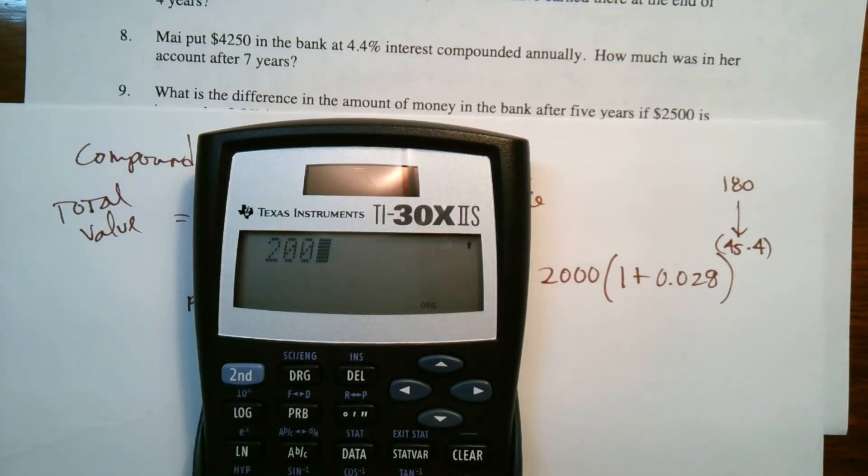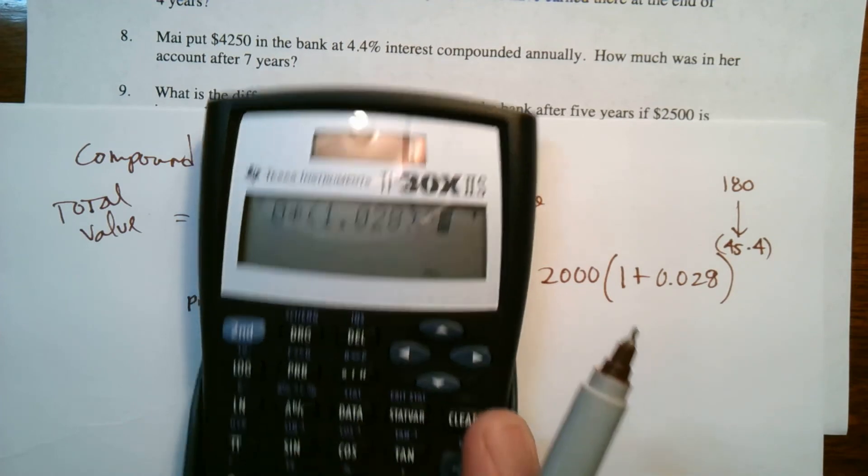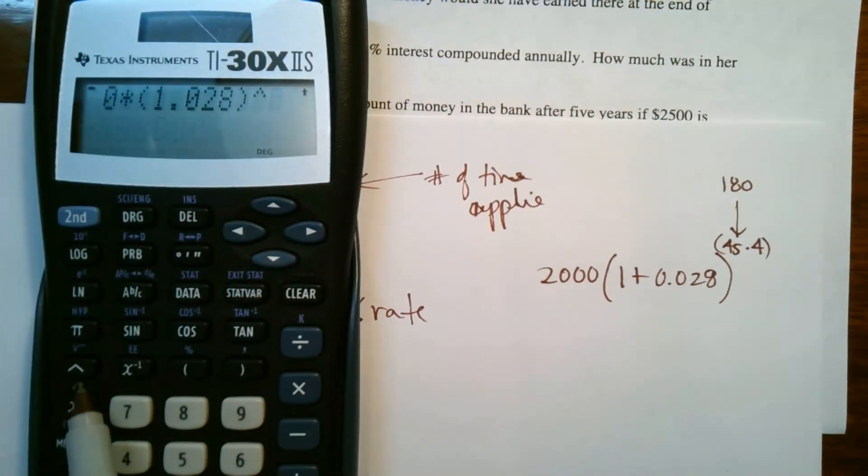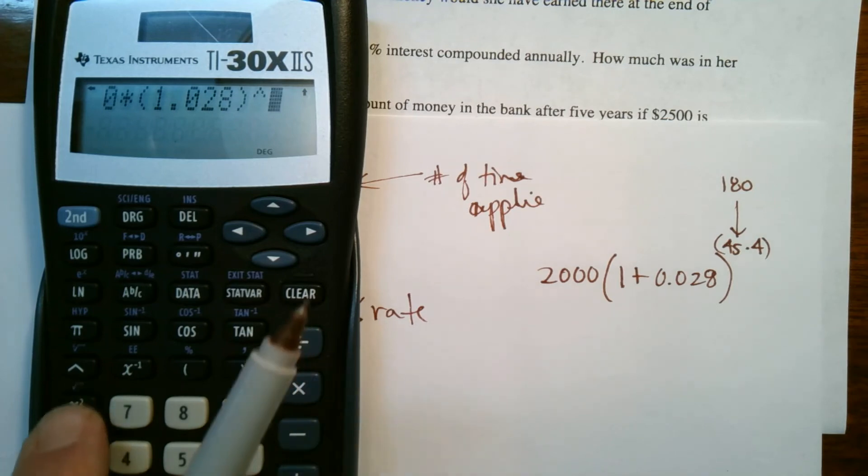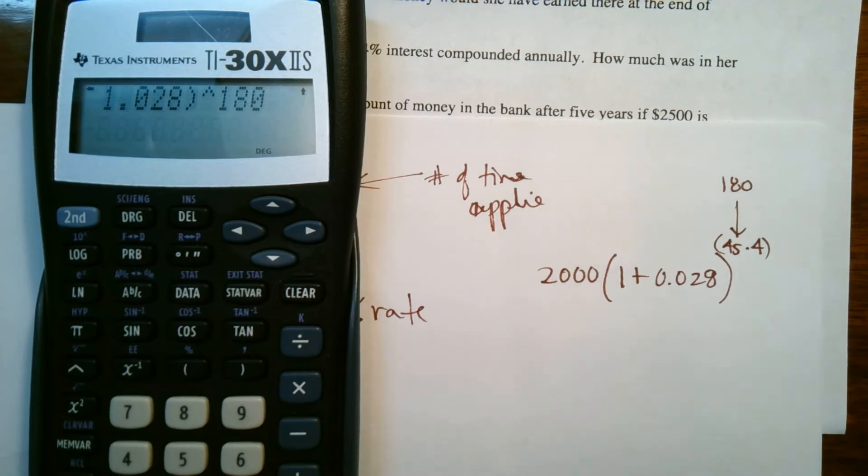So we'll do that on our calculator again. So in this case, it's 2000 times, well, one plus that is just really 1.028. And then all of that to the, so your exponent key is that little hat key on your calculator. This little hat key, that's your exponent key. And that's all to the 180. Enter.